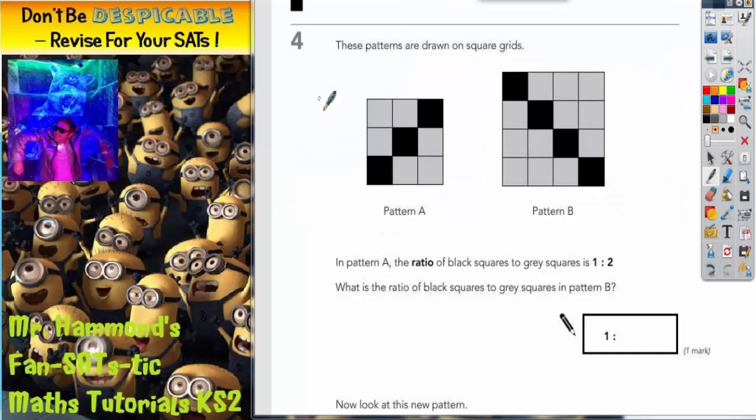Question 4 is all about ratio. It says these patterns are drawn on square grids. We've got pattern A and pattern B. It says in pattern A the ratio of black squares to grey squares is 1 to 2. Let's just unpick this statement first before we go any further. In pattern A we've got black squares to grey squares. Let's stick to the order that it says it in the question here. And it's telling us that the ratio is 1 to 2.